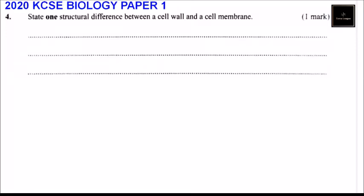This is question number four, 2020 KCSE biology paper one: state one structural difference between a cell wall and a cell membrane. The structural difference is the difference in how they are made or how they look physically. I'm going to give you several differences.